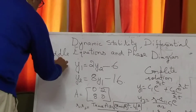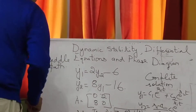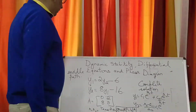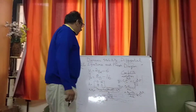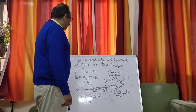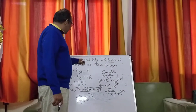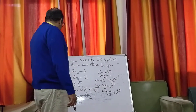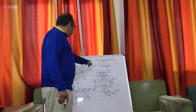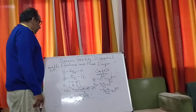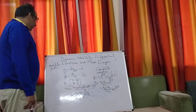So we will talk about the saddle path, and we will try to understand the dynamic stability using the phase diagram.